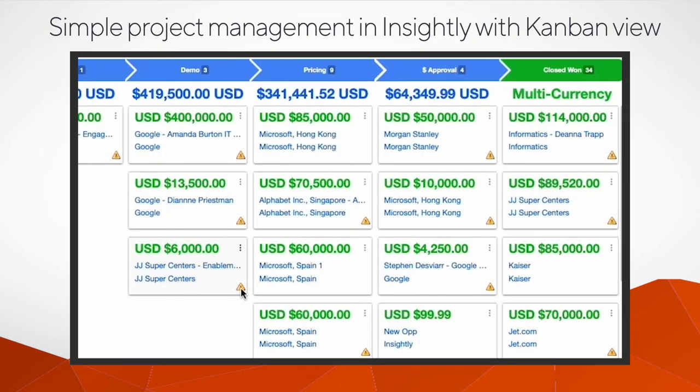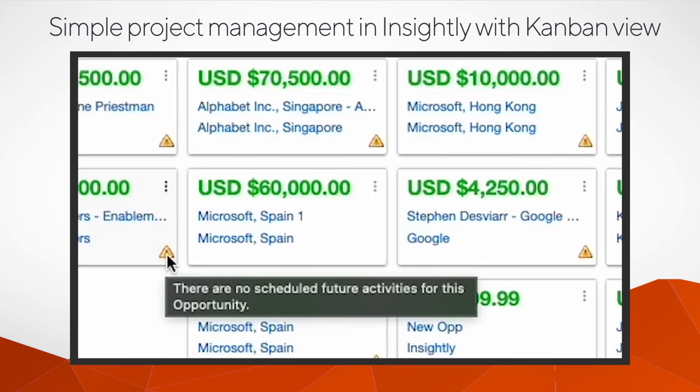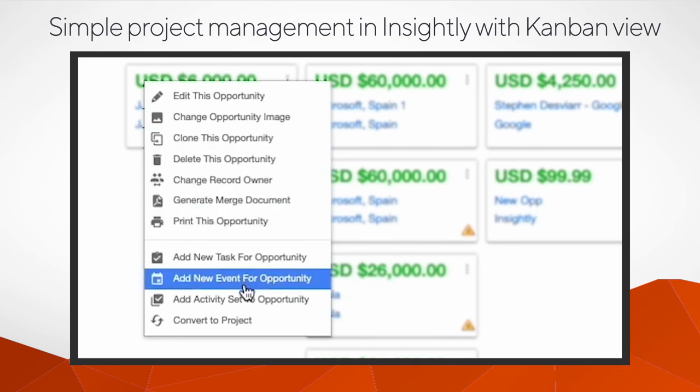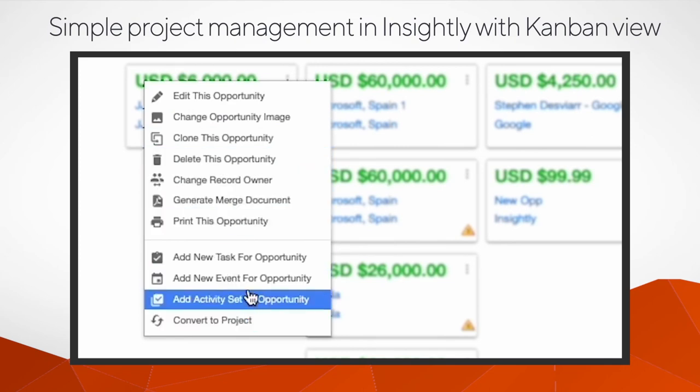A warning icon in the corner of a card means there are no tasks due in the near future, indicating that a customer or deal might need attention. Click the record name or three dot menu to view or take action on the record.